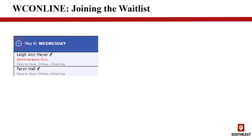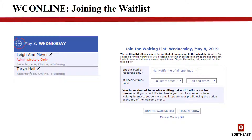Sometimes during busy times of the semester, like midterms or near finals, you may find that the Writing Center does not have availability on the day you would like to book an appointment. When this happens, you can join our waitlist to be notified of cancellations or openings. To do this, from the main appointment schedule, click on the clock icon on the day you would like to schedule. Then fill out the brief form that will notify you should any openings become available. Please be aware that an appointment is not scheduled for you automatically, but you can then log in to WCOnline and make an appointment during that opening.